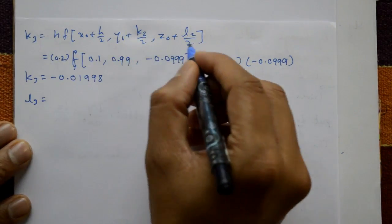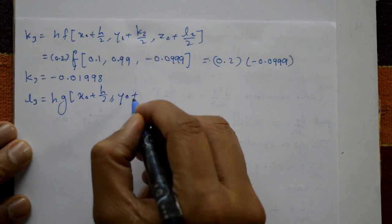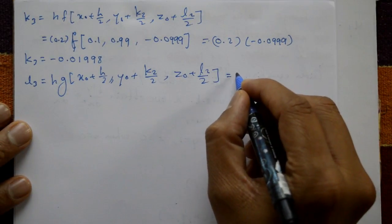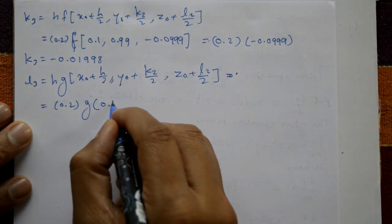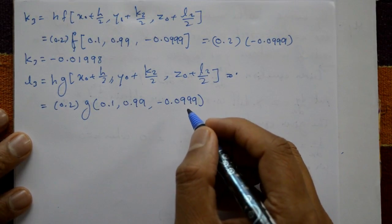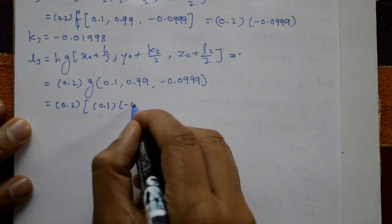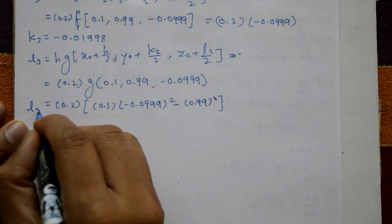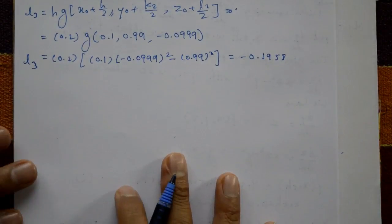l3 = h·g(x₀ + h/2, y₀ + k2/2, z₀ + l2/2) = 0.2·g(0.1, 0.99, -0.0999). Using g(x,y,z) = xz² - y²: 0.2 × (0.1×(-0.0999)² - (0.99)²). So l3 = -0.1958.